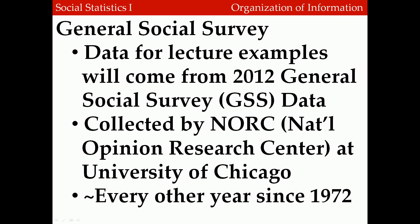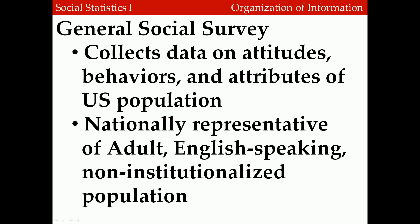For this lecture, I'm going to be using examples from the General Social Survey, or the GSS, collected in 2012. The GSS is an ongoing data collection effort organized by the National Opinion Research Center, NORC, at the University of Chicago. NORC has been collecting the GSS data approximately every other year since 1972. The GSS represents a major source of information on the attitudes, behaviors, and attributes of the U.S. population. It's nationally representative of adults, that is people age 18 or over, who are English-speaking and non-institutionalized.